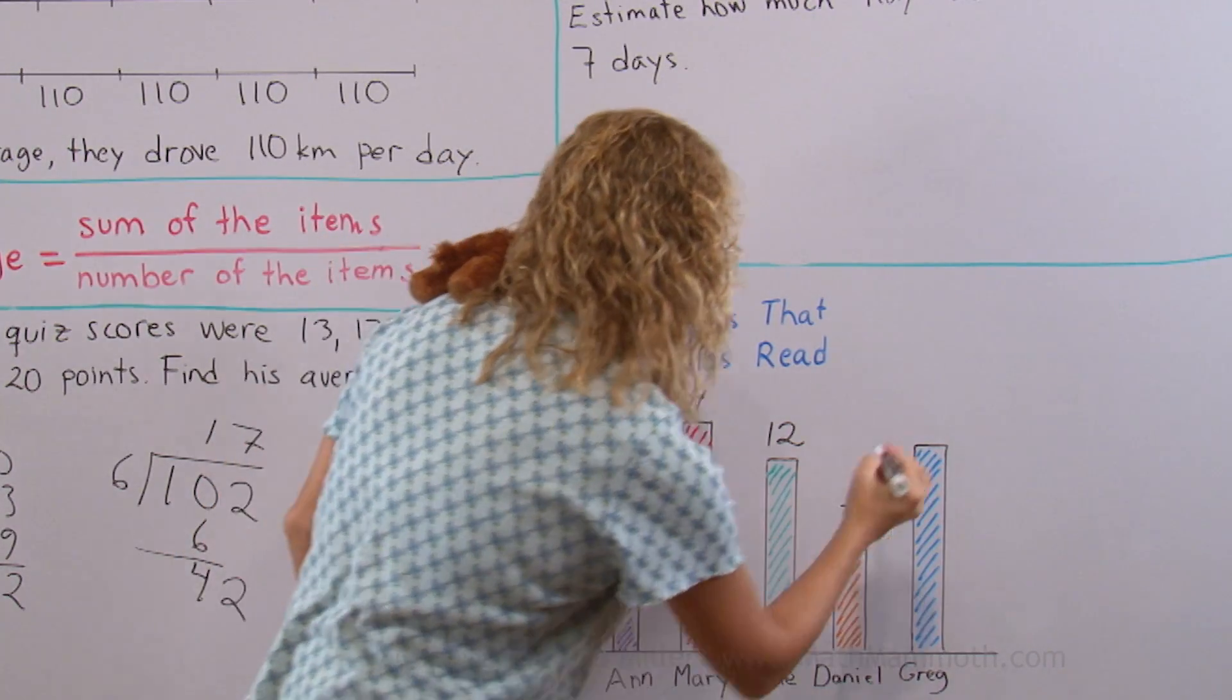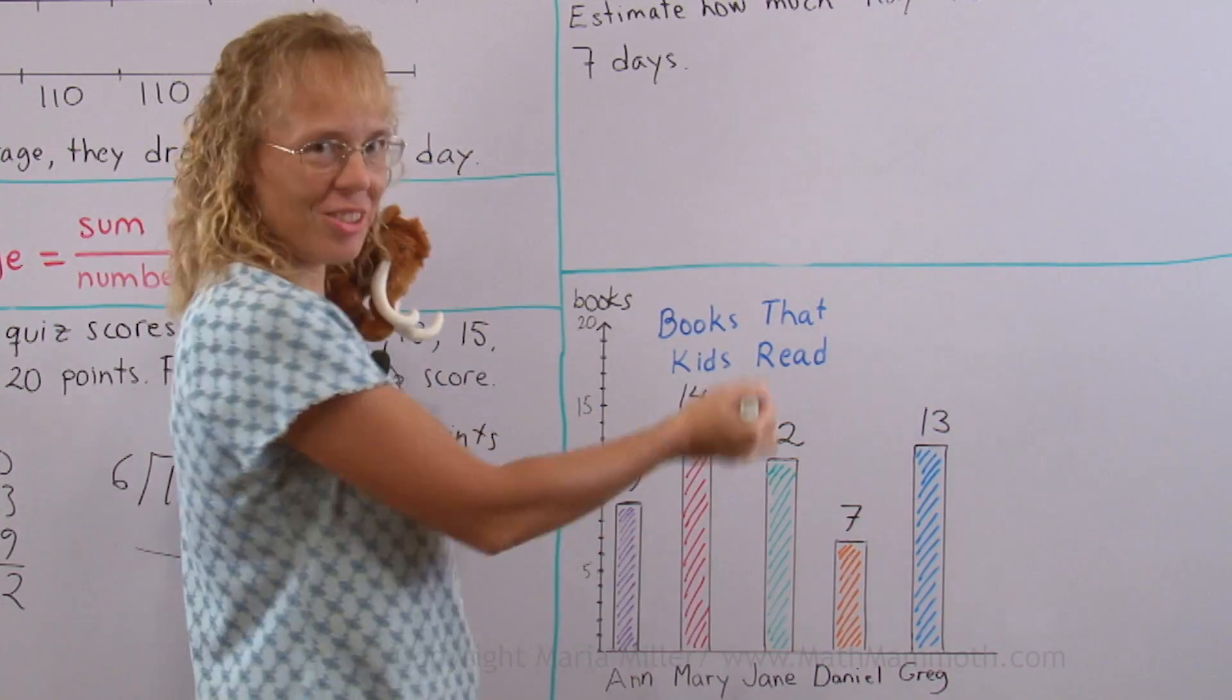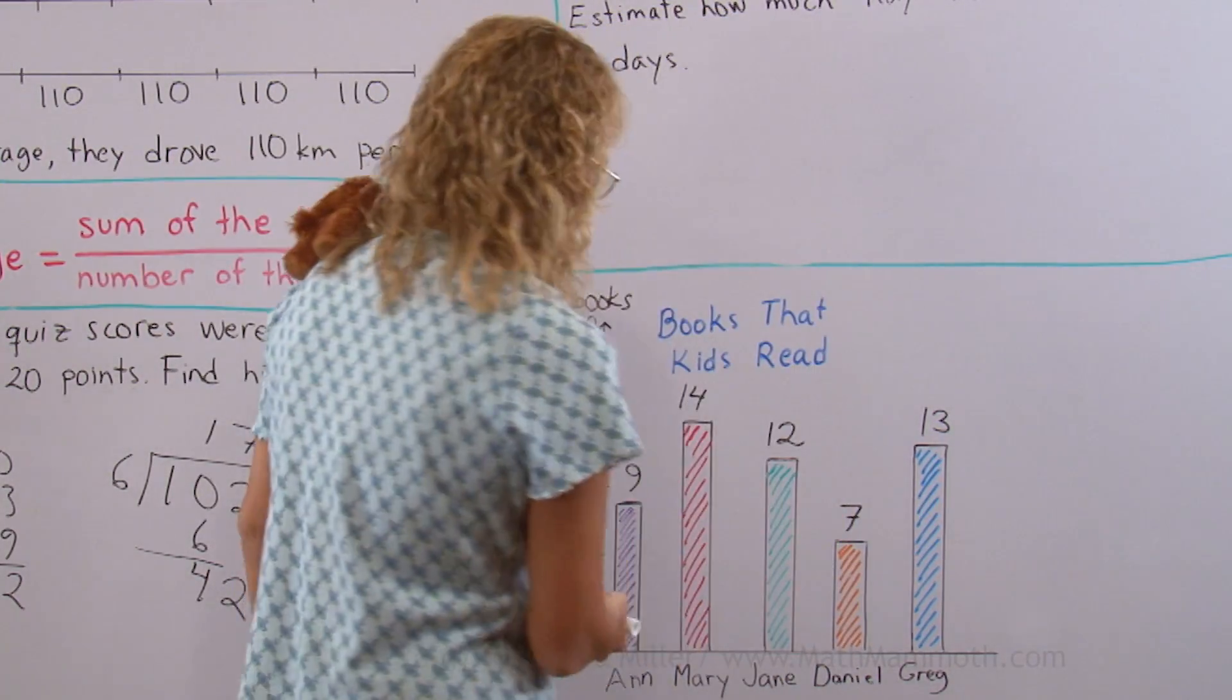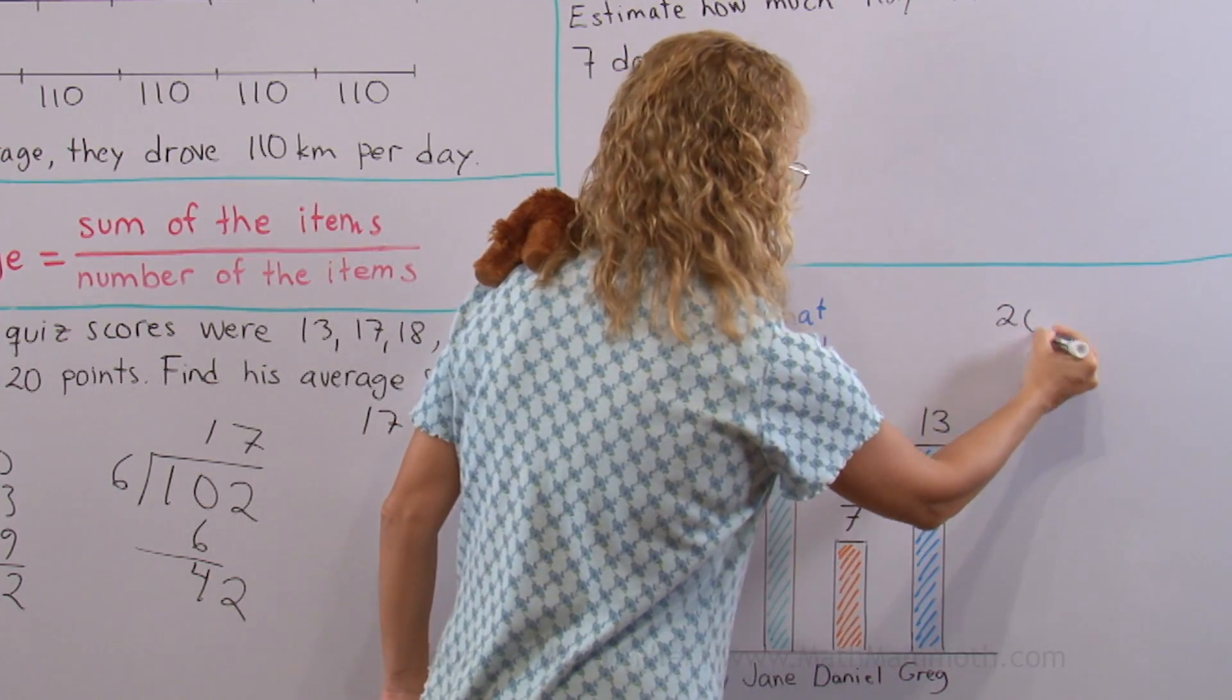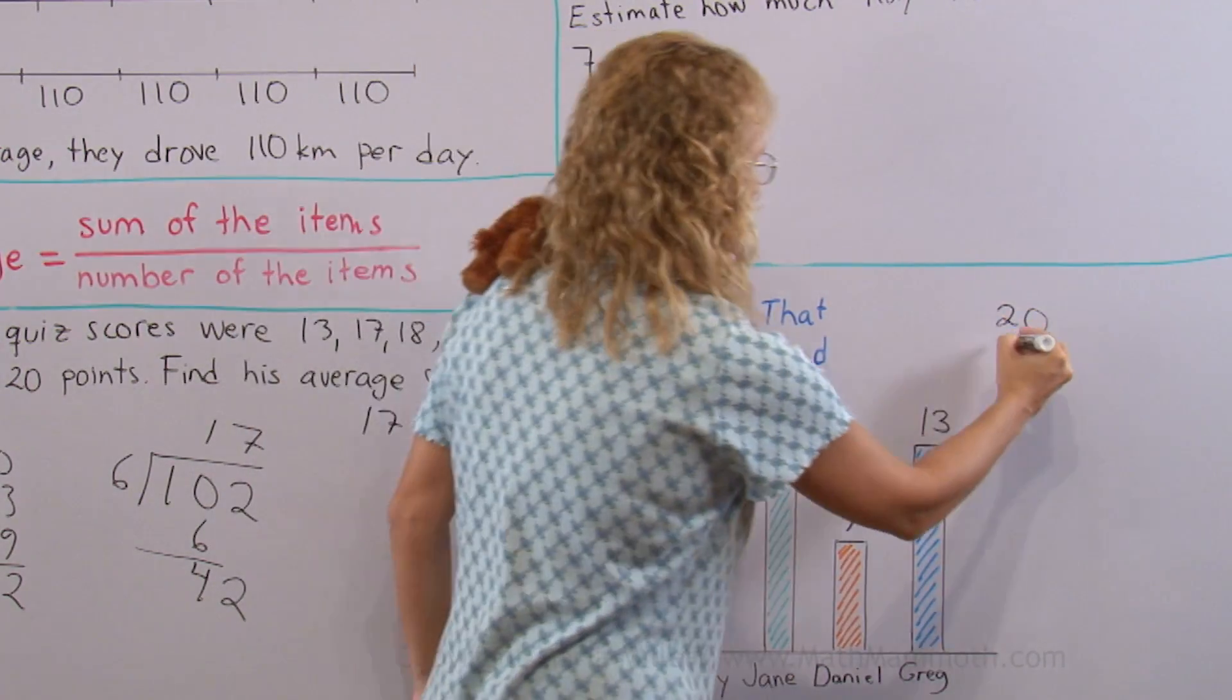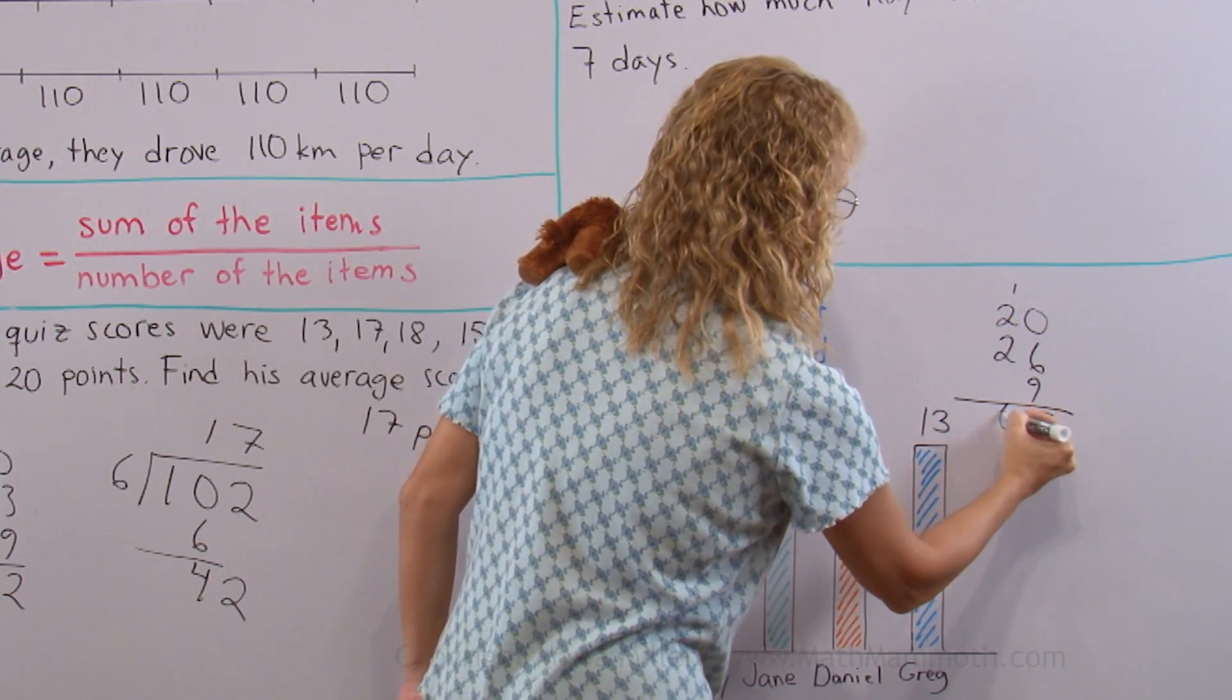And Greg, 13. Okay, I hope I got it right now. Now we add those numbers to find the average. So here I would have 13 and 7 which is 20. These two make 26 and then there's 9. 6 plus 9 is 15. I get 55.